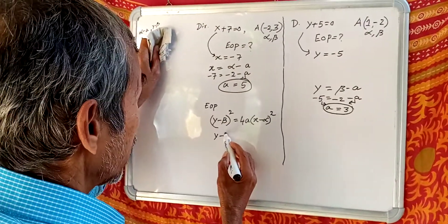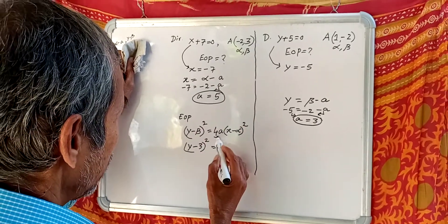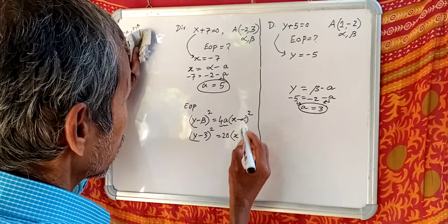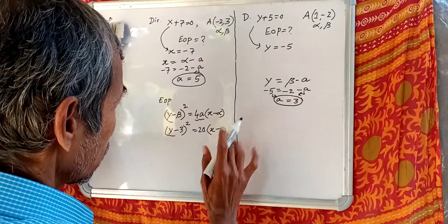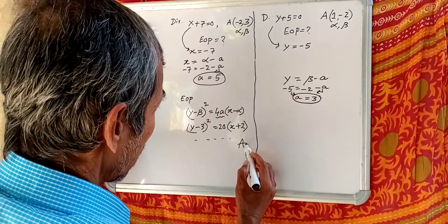Now Y minus 3 whole square equals—A is 5, therefore 20 into X. Alpha is minus 2, plus 2. This is the answer.